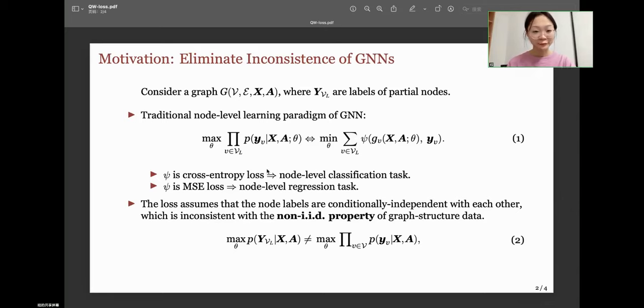Most existing methods formulate the learning paradigm of GNN as equation 1. When loss is cross-entropy, it corresponds to a classification task, and when it is MSE, it corresponds to a regression task. However, the approach assumes that the nodes on the graph are conditionally independent, which is inconsistent with graph structure data, where the nodes exhibit non-IID properties.